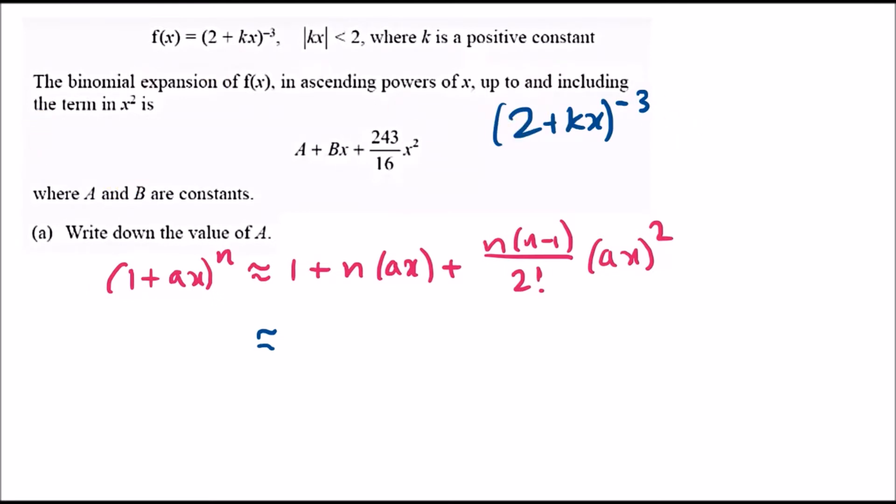We need to take 2^(-3) out, so this is 2^(-3) times (1 + kx/2)^(-3). If you realize, ax in this case would just be k/2, and n is negative 3. The only difference is we're going to multiply everything by 2^(-3).